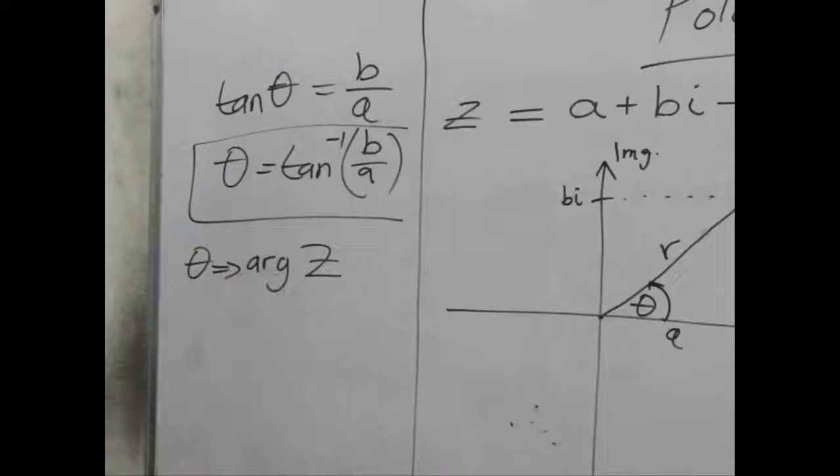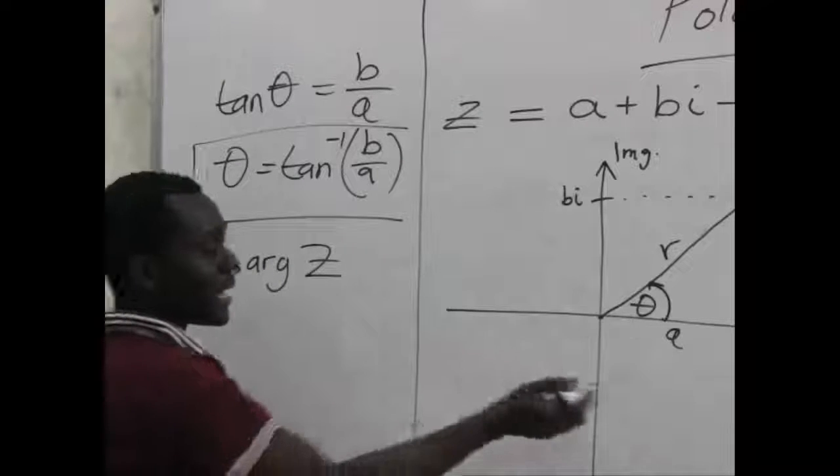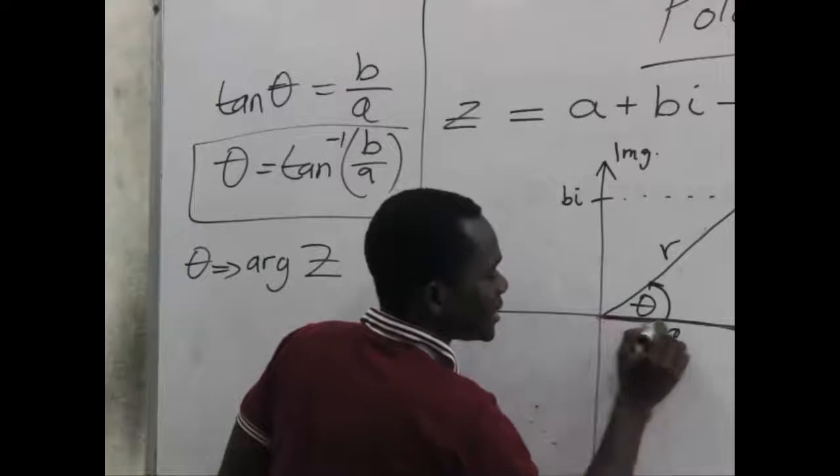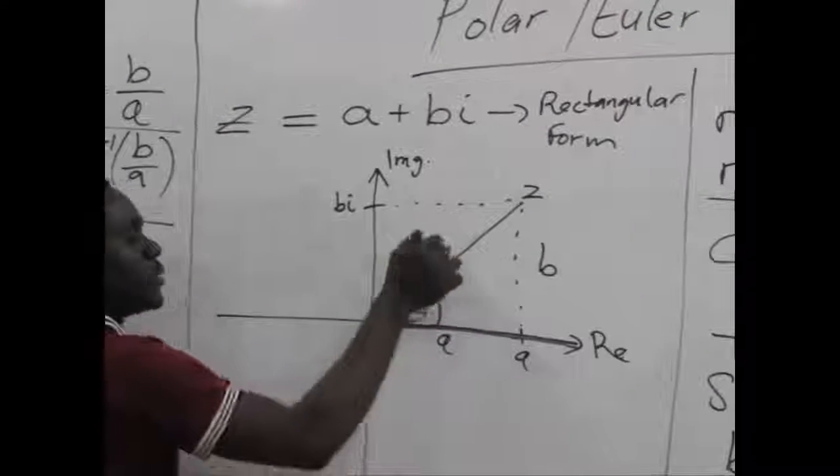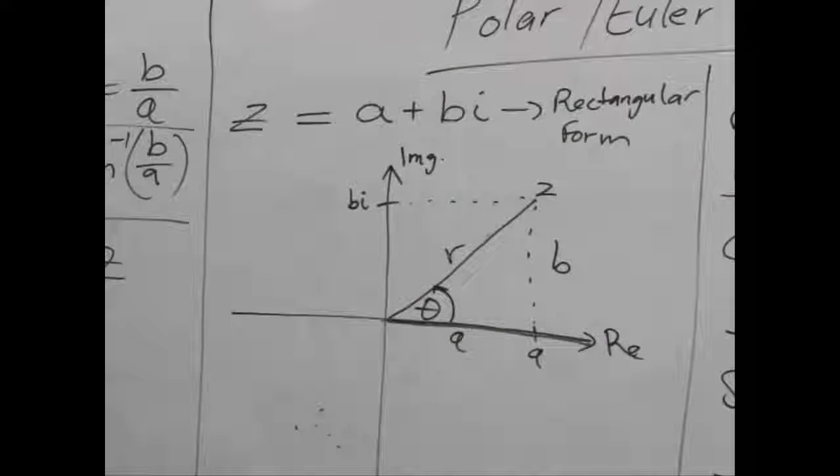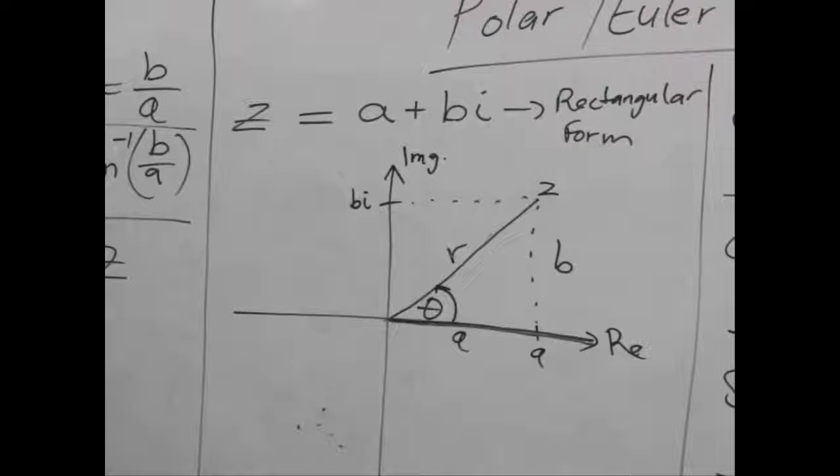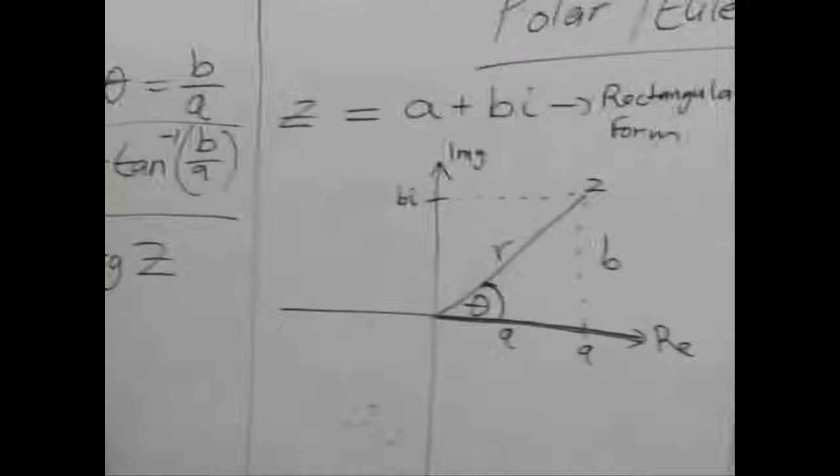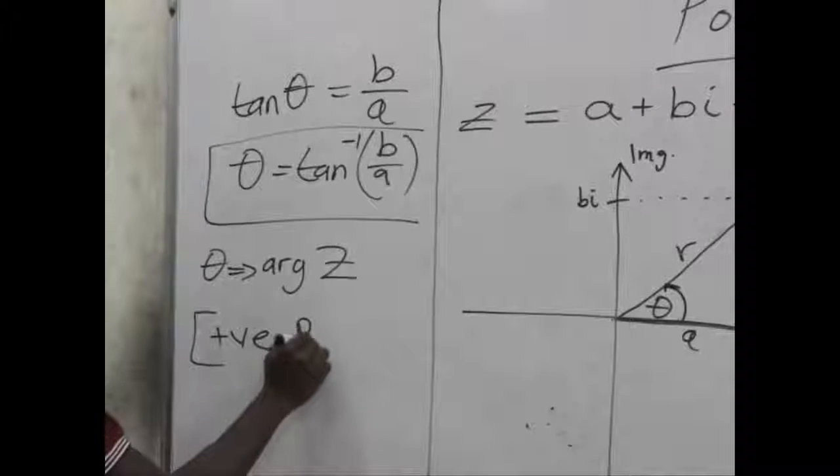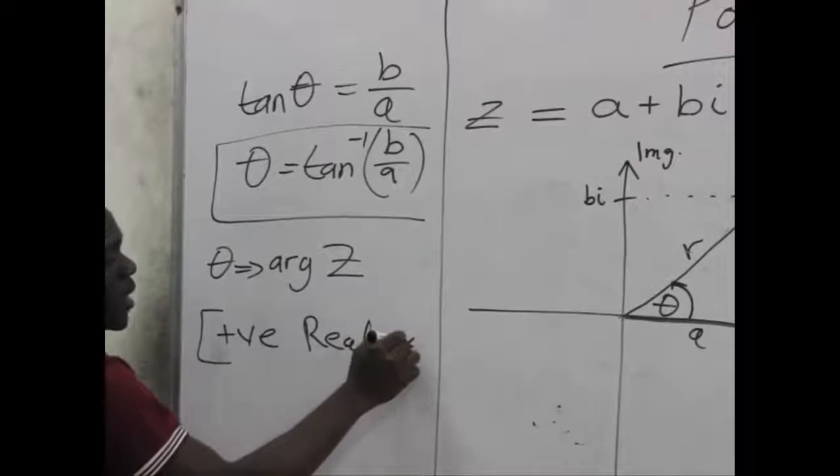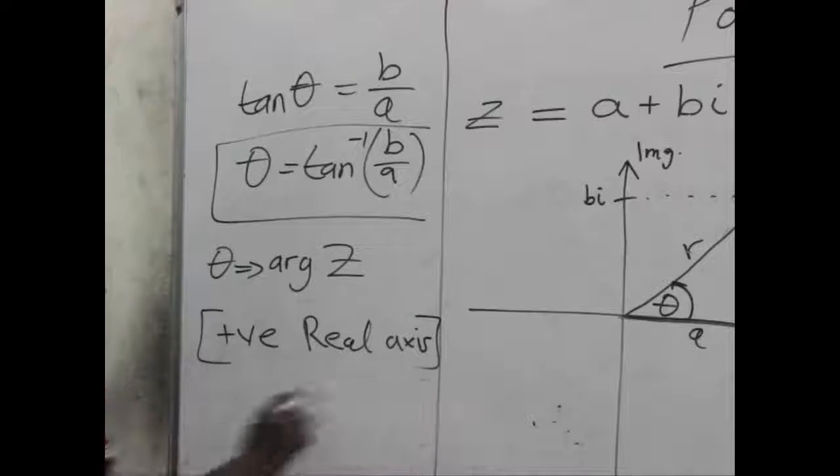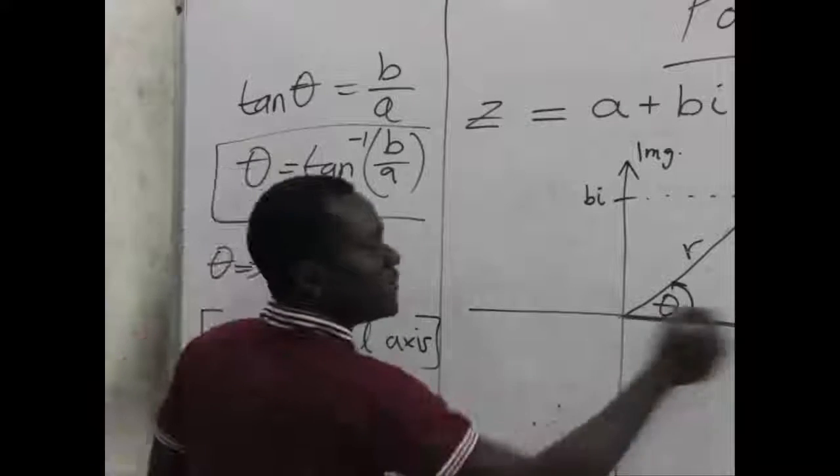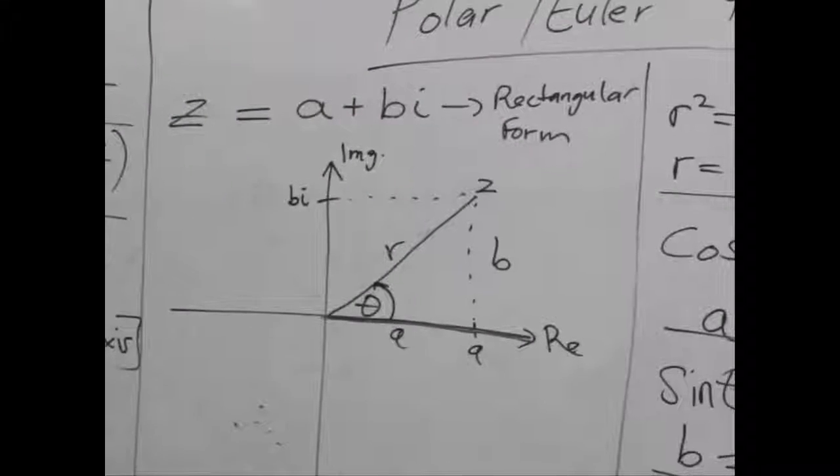And we always measure that angle from the positive real axis to meet where the complex number falls in the plane. So take note, we always start measuring theta from the positive real axis. No matter what the circumstance is, we always start measuring it from the positive real axis.